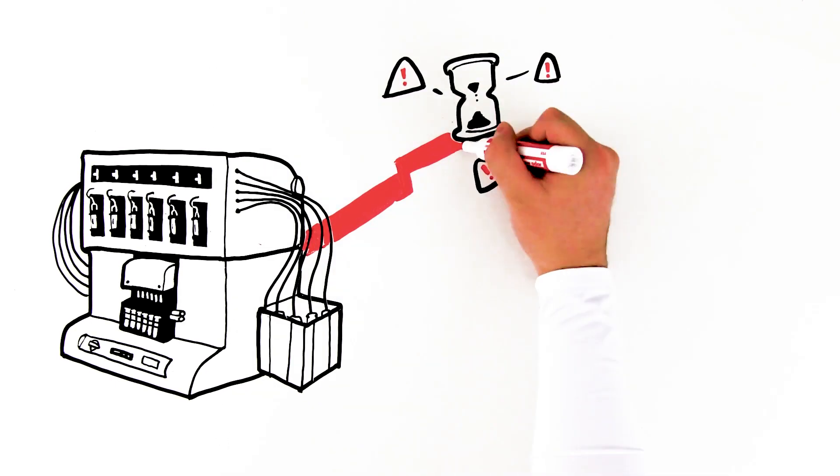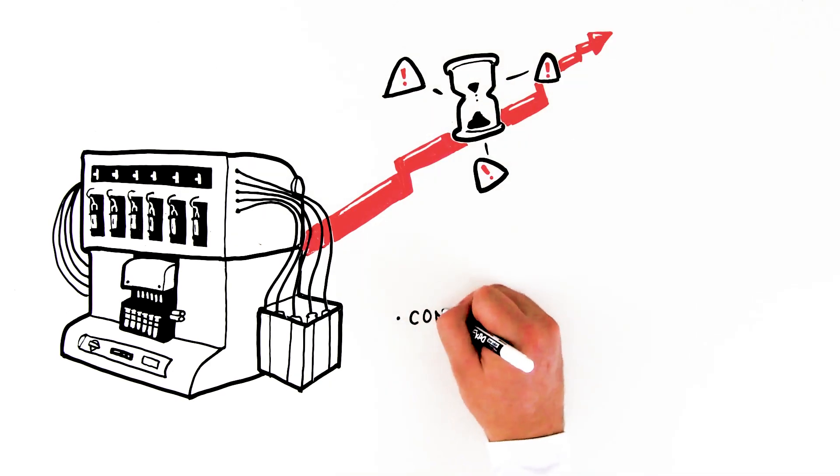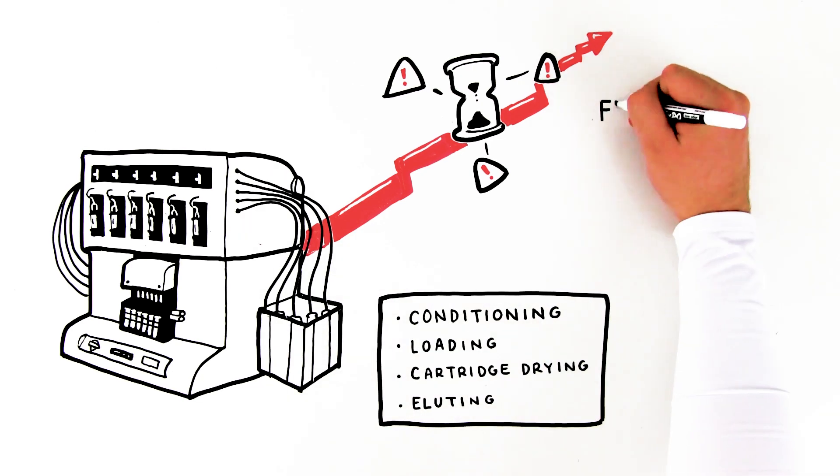The Dionex AutoTrace 280 PFAS automates all four steps of SPE: conditioning, loading, cartridge drying and eluting, reducing sources of error while improving recovery and reproducibility.